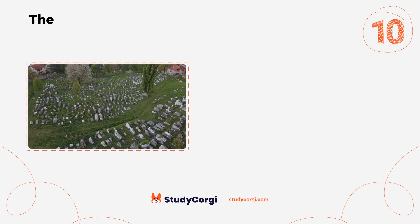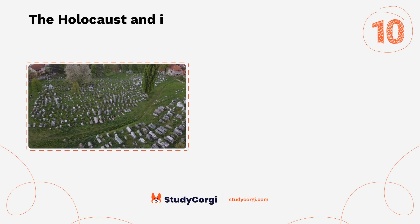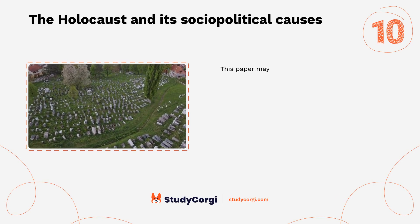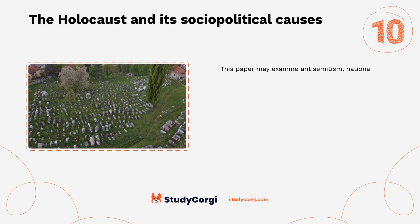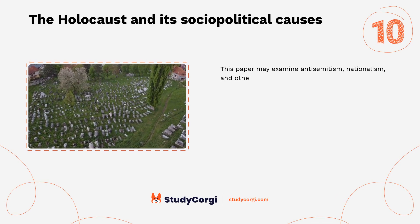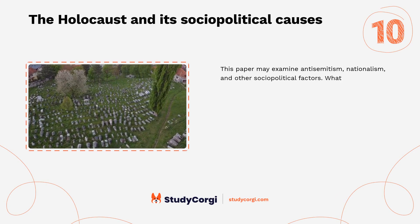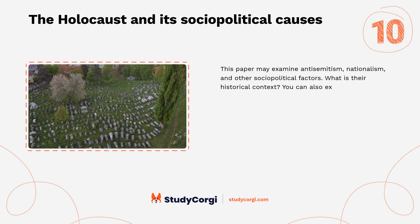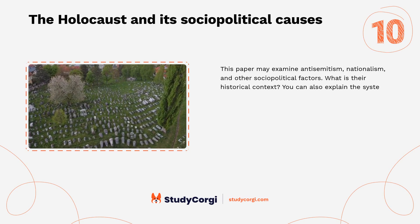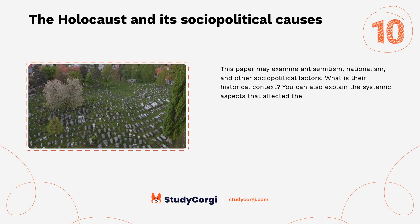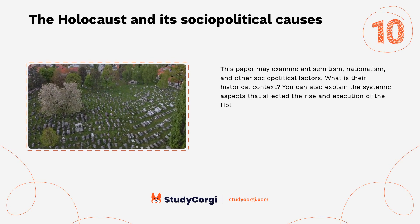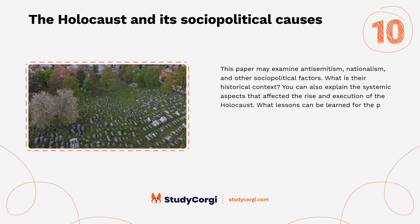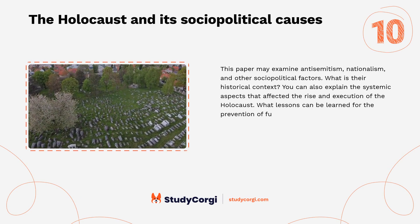The Holocaust and its sociopolitical causes: This paper may examine antisemitism, nationalism, and other sociopolitical factors, including their historical context. You can also explain the systemic aspects that affected the rise and execution of the Holocaust, and what lessons can be learned for the prevention of future genocides.